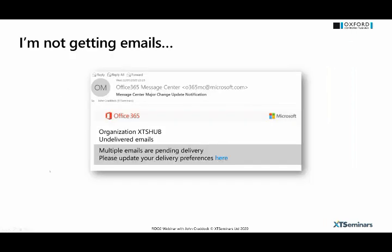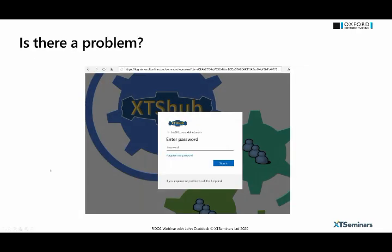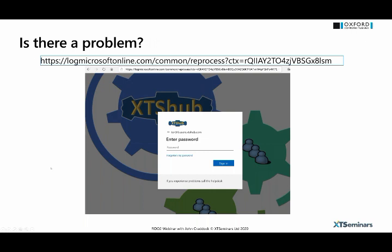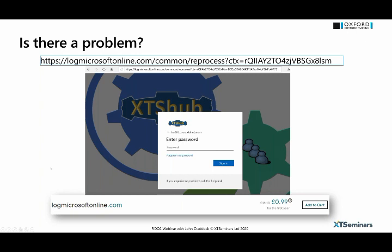Then of course there's the phishing email — multiple emails pending delivery, please update your delivery preference — which causes immediate panic and you click the link. If you look very carefully at the URL, you'll see it's 'log microsoftonline.com' rather than 'logon microsoftonline.com.' A couple of weeks ago I could actually purchase that domain name for a mere 99p for the first year. Microsoft would come down on me like a ton of bricks, but you could use it for a short while to get people's passwords through this phishing attack — a genuine-looking Microsoft login page.